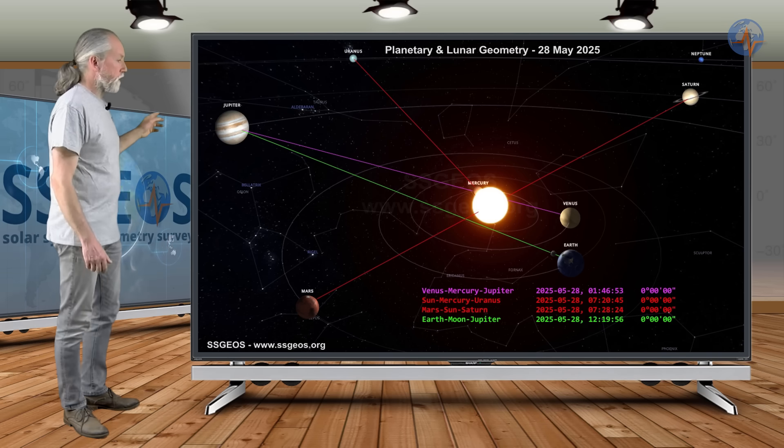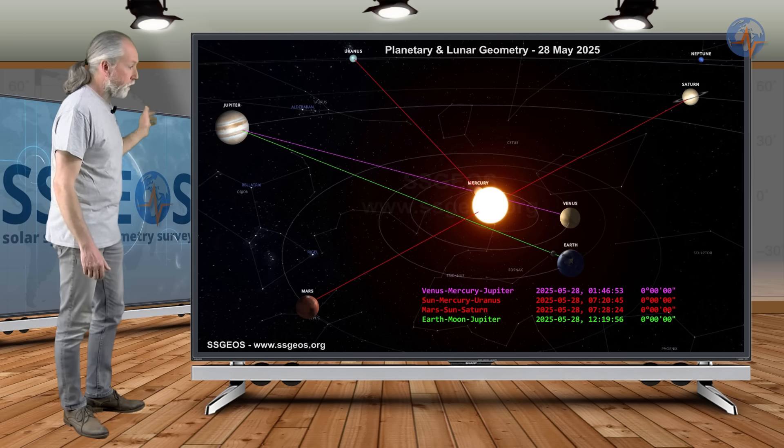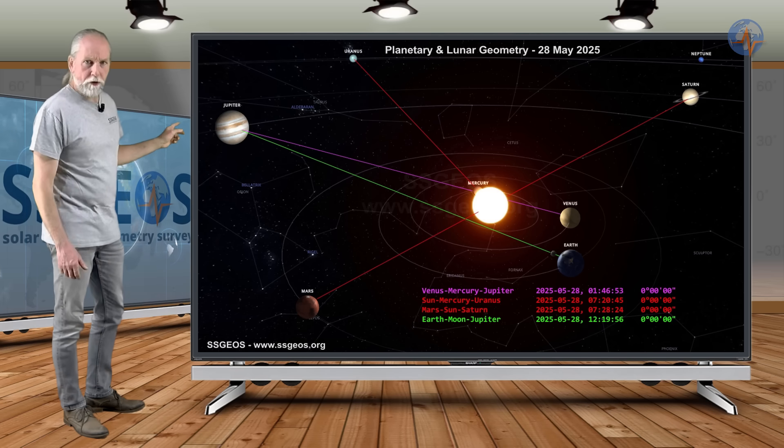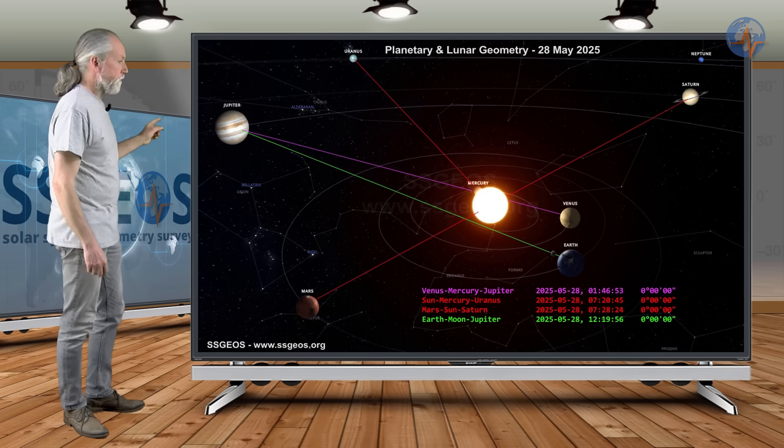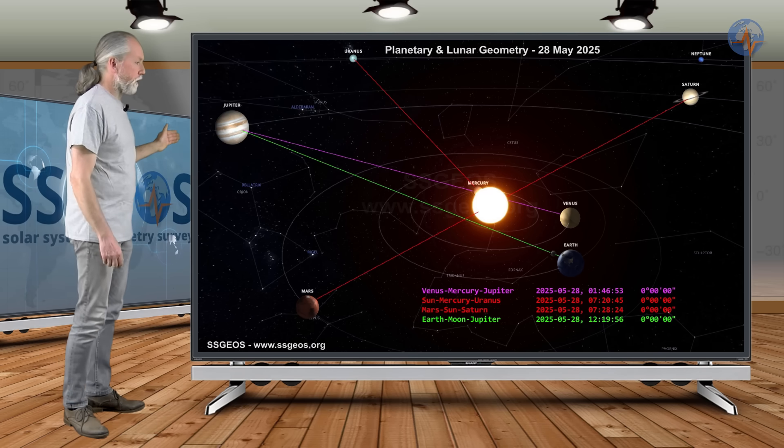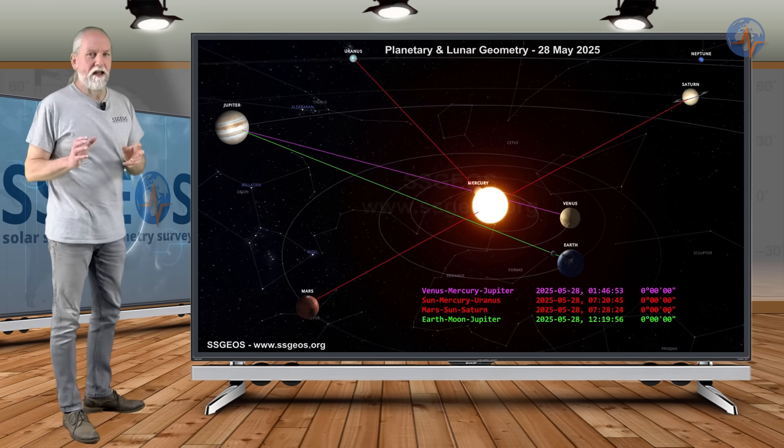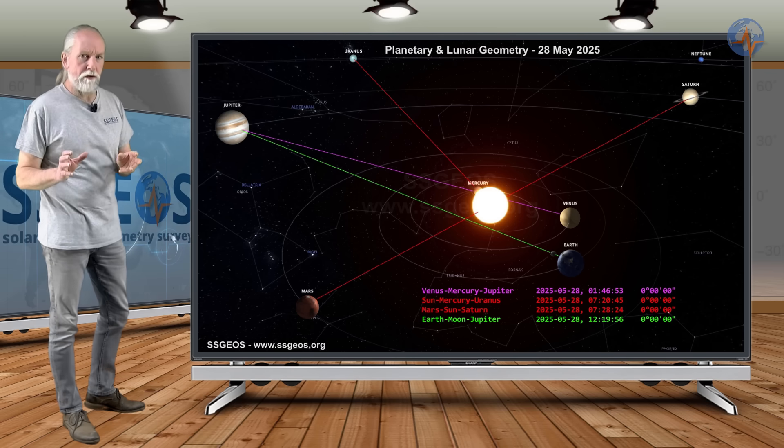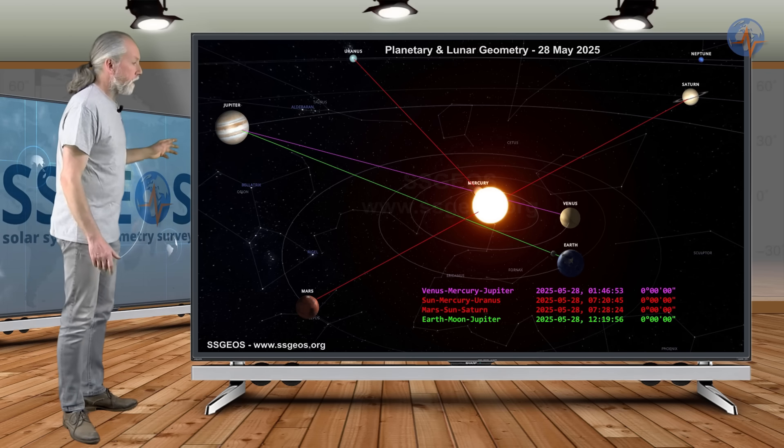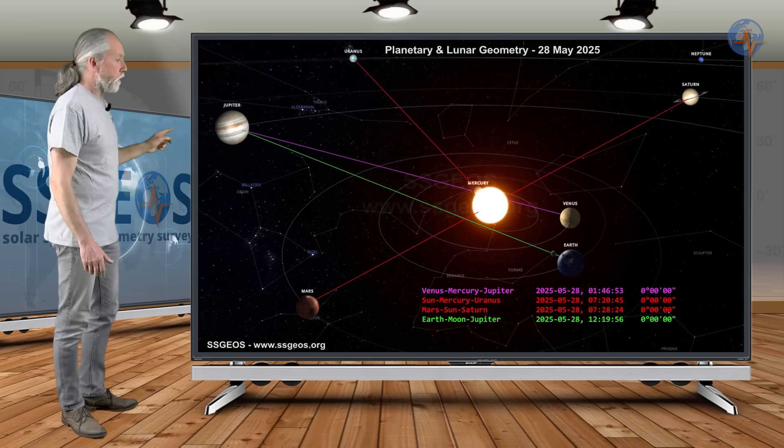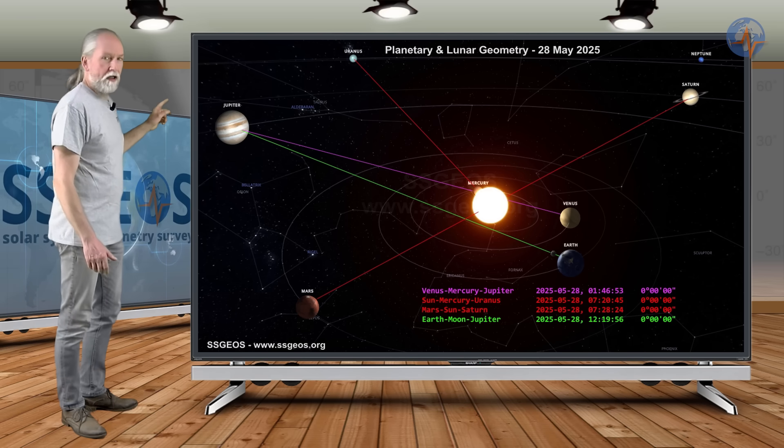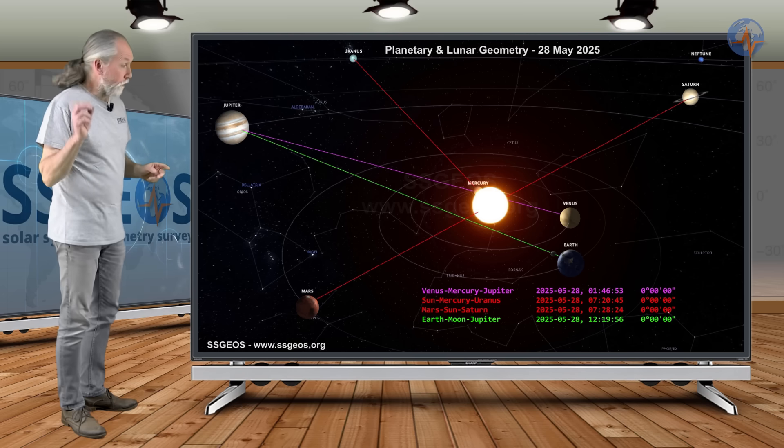In the solar system, we see this lunar geometry. It is the green line. That's a lunar conjunction with Jupiter, always very significant. We have Mars, Sun and Saturn in conjunction. That is not really a critical conjunction, but it converges with the Sun, Mercury and Uranus and also Venus, Mercury, Jupiter. And that combination is really critical.